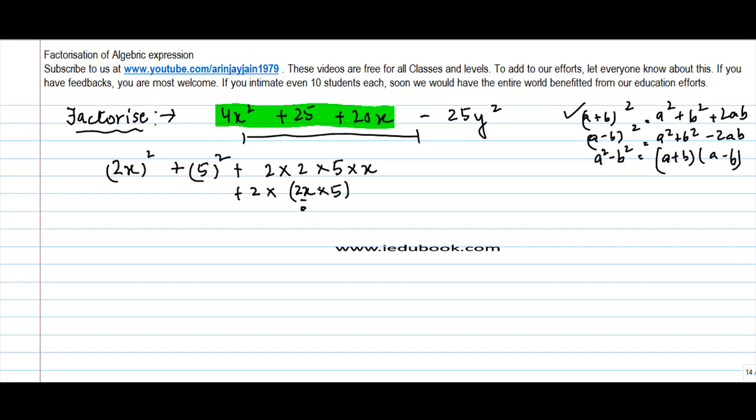This is nothing but ab. This is b square. This is a square. So basically this first equation becomes what? It can be written in this form of a plus b whole square. The value of a and b being 2x and 5, so you can write this as 2x plus 5 whole square minus what was the second part?